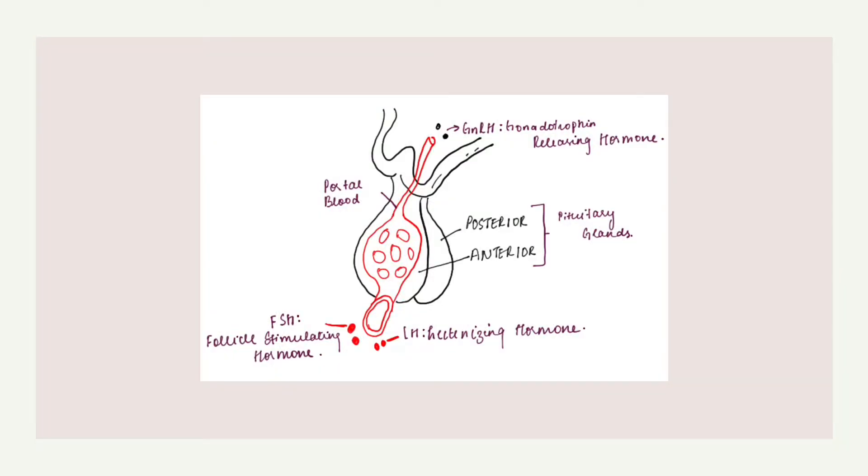Gonadotrophin-releasing hormone is produced from the cells in the hypothalamus. It is then released into small blood vessels that carry the hormone to the pituitary gland. As a consequence, the pituitary gland produces luteinizing hormone and follicle-stimulating hormone, FSH.